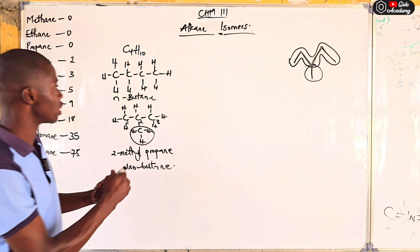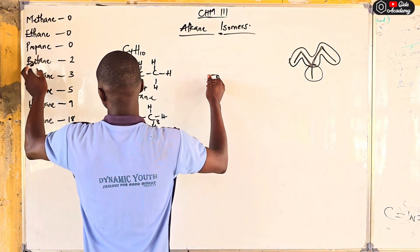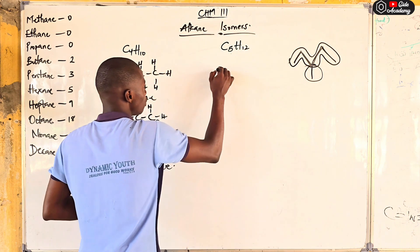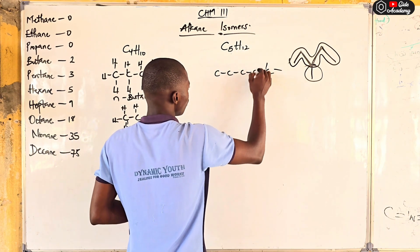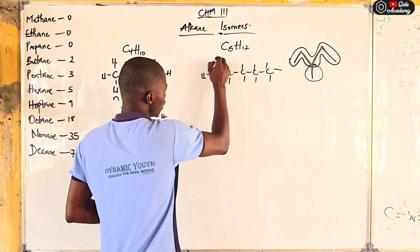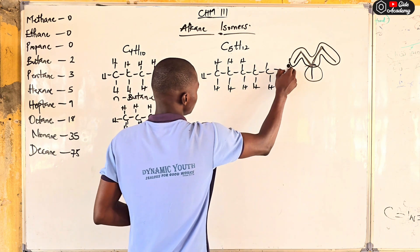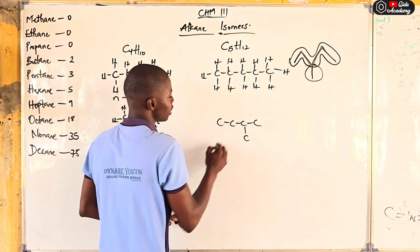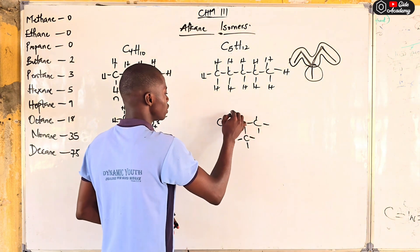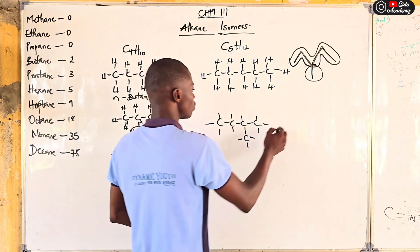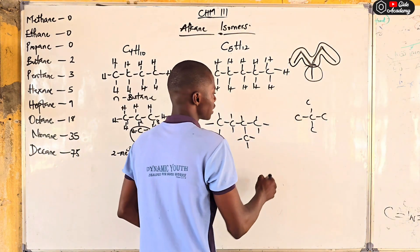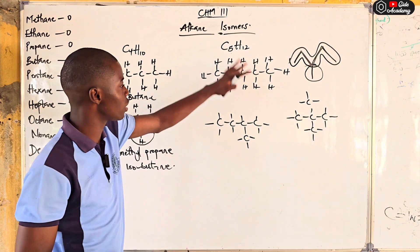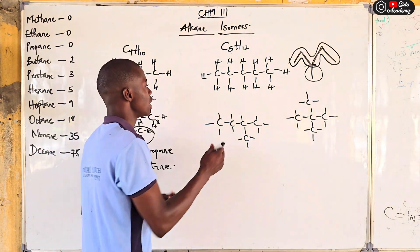Now let's look at pentane, which has the formula C5H12. You can draw it as a straight chain: one, two, three, four, five carbons, with twelve hydrogens. Alternatively, move one carbon atom to create a branch — still one, two, three, four carbons in the main chain with the branch adding the fifth. Or rearrange further. In each case they share the same molecular formula but have different structural formulas.